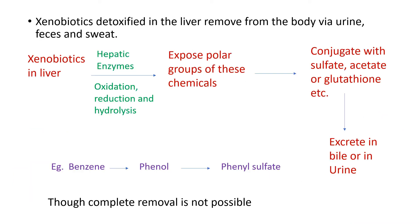The body tries to detoxify these harmful chemicals, and the process takes place in the liver. Liver enzymes, or hepatic enzymes, oxidize, reduce, or hydrolyze these chemical compounds and expose their polar groups. These polar groups conjugate with sulfate, acetate, or glutathione present in the liver, and finally they exit the body via bile, sweat, or urine.